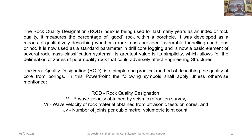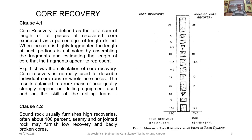In this presentation, the following symbols apply unless otherwise mentioned: RQD implies Rock Quality Designation; V means primary wave velocity obtained by seismic refraction survey; Vr means wave velocity of rock material obtained from ultrasonic test on cores; and Jv means number of joints per cubic meter, the volumetric joint count. On the right-hand side, a figure is shown of the total drill run in which the pieces of cores collected from the site are depicted. This figure is taken directly from the Indian Standard code referred to in this lecture.